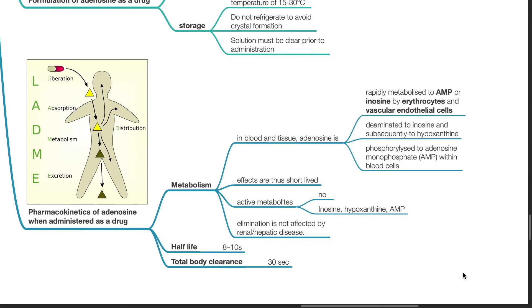Pharmacokinetics of adenosine when administered as a drug: It is metabolized in blood and tissue to AMP or inosine by erythrocytes or vascular endothelial cells. Effects are short-lived. There are no active metabolites. Inosine, hypoxanthine, and AMP are not active. Elimination is not affected by renal or hepatic disease. Half-life is 8 to 10 seconds. Total body clearance is 30 seconds.